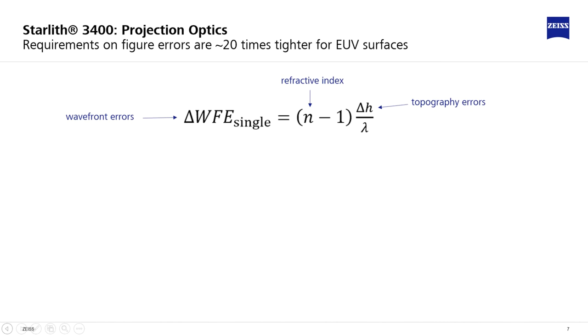In addition to the increased sensitivity of mirrors as compared to lens surfaces, also the short wavelength itself enhances the implications of the surface topography.